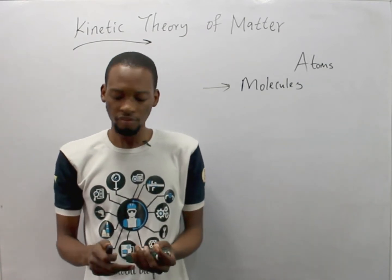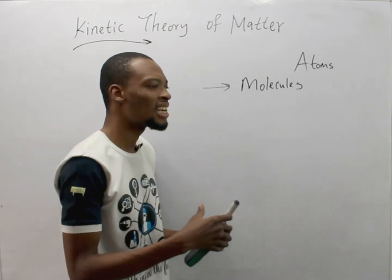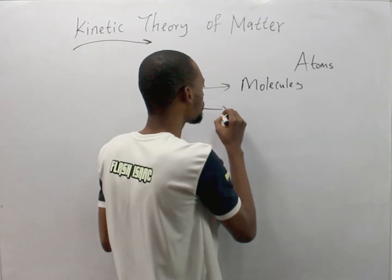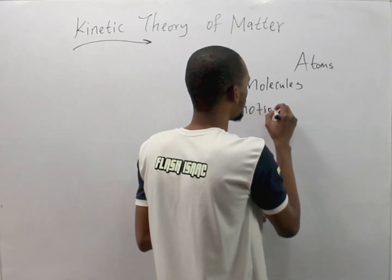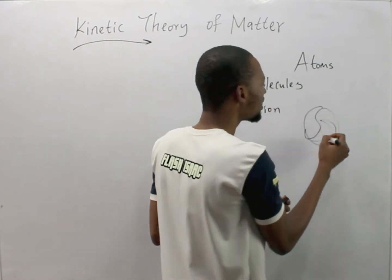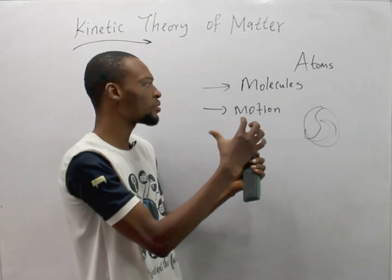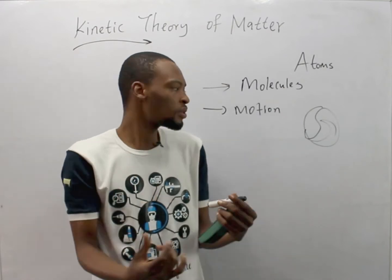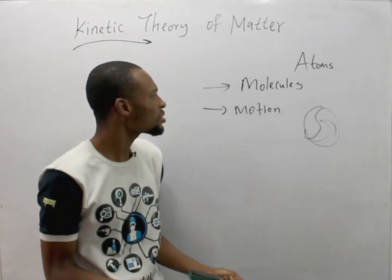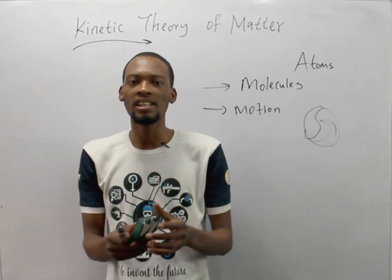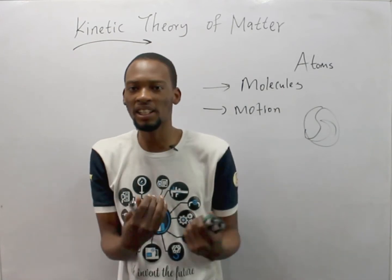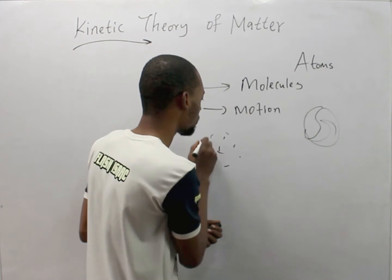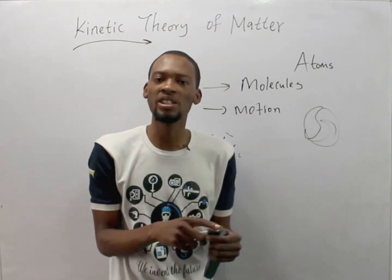Matter is made up of molecules, and each of these molecules are in constant random motion. So when you have a substance, it has a lot of molecules or particles, and these particles are in constant random motion. It also states that while they are moving, they collide with one another, so there is collision among the particles.